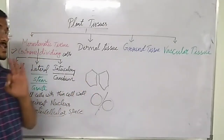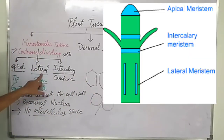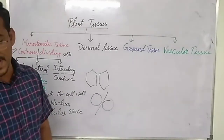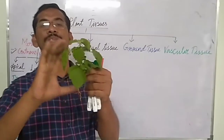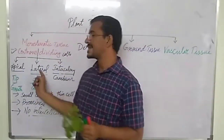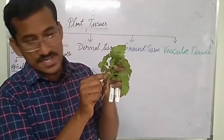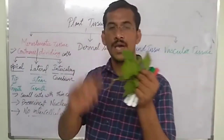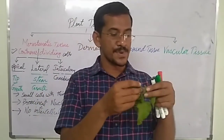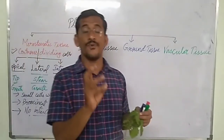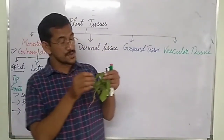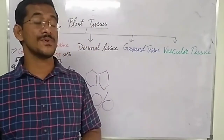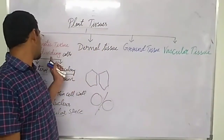To summarize: meristematic tissues are continuously dividing cells, small with thin cell walls, prominent nucleus, dense cytoplasm, and no intercellular spaces. They are of three types: apical meristematic tissue (present on root tip or shoot tip, helps in growth of shoot and root), lateral meristematic tissue (present on lateral sides of the stem, helps in stem growth), and intercalary meristematic tissue or cambium (present at leaf base, flower, or where branches arise, helps in branching).